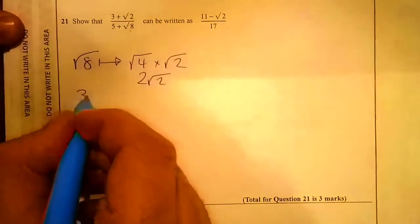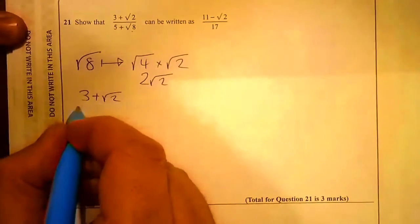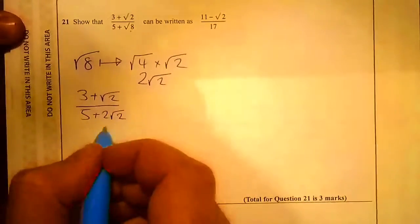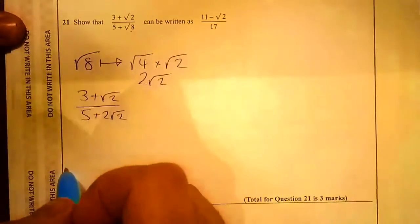So I'm going to rewrite that as (3 + √2)/(5 + 2√2). This will help things work out nicely later.